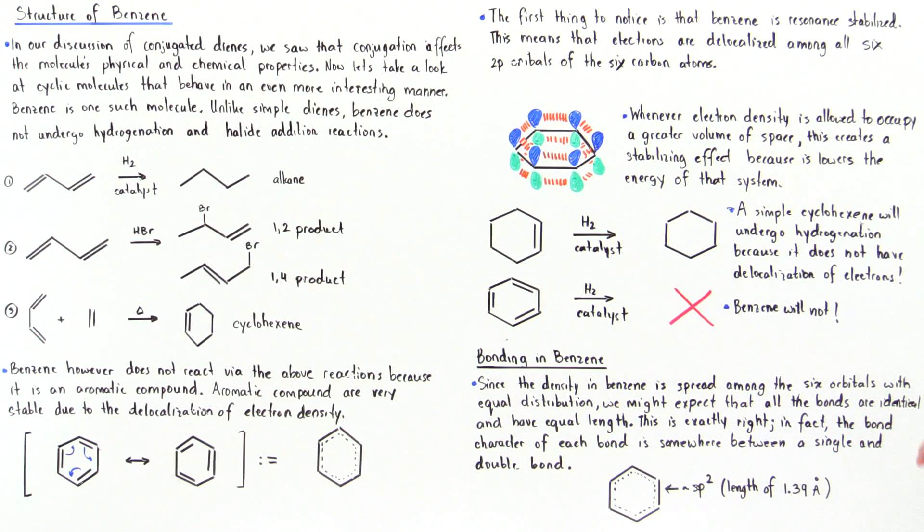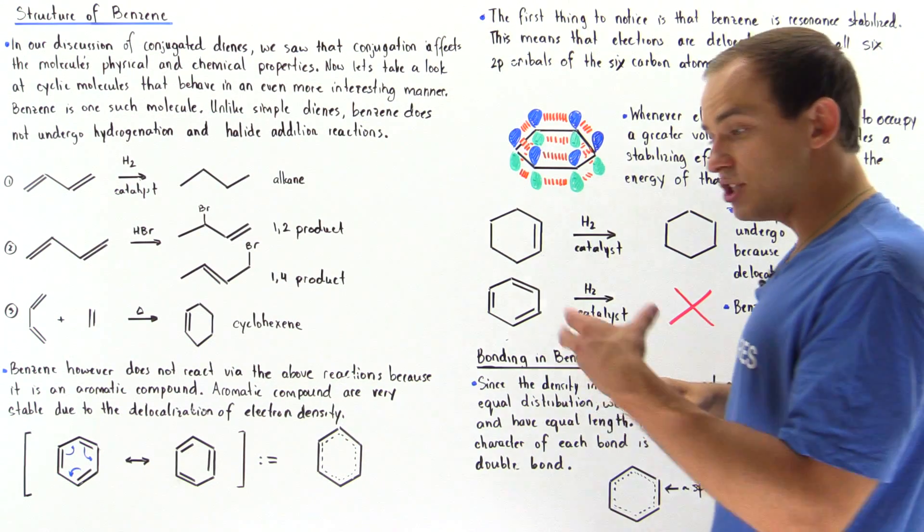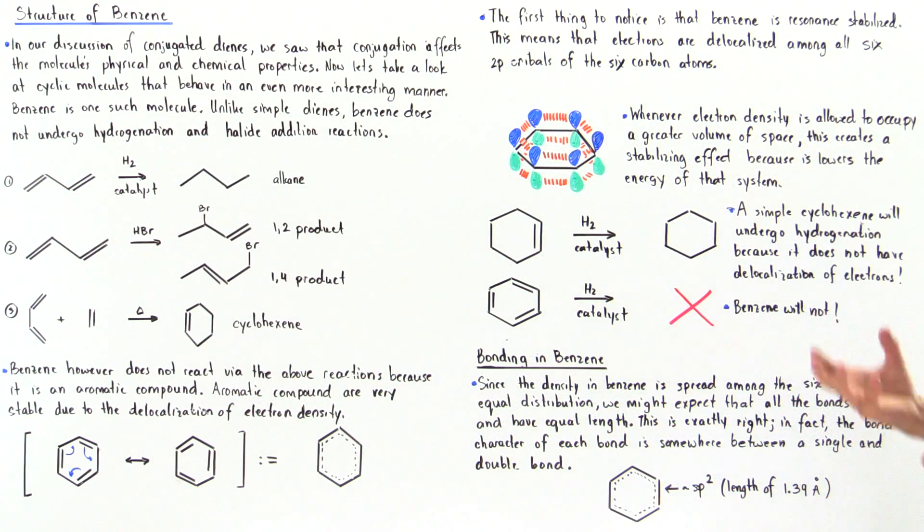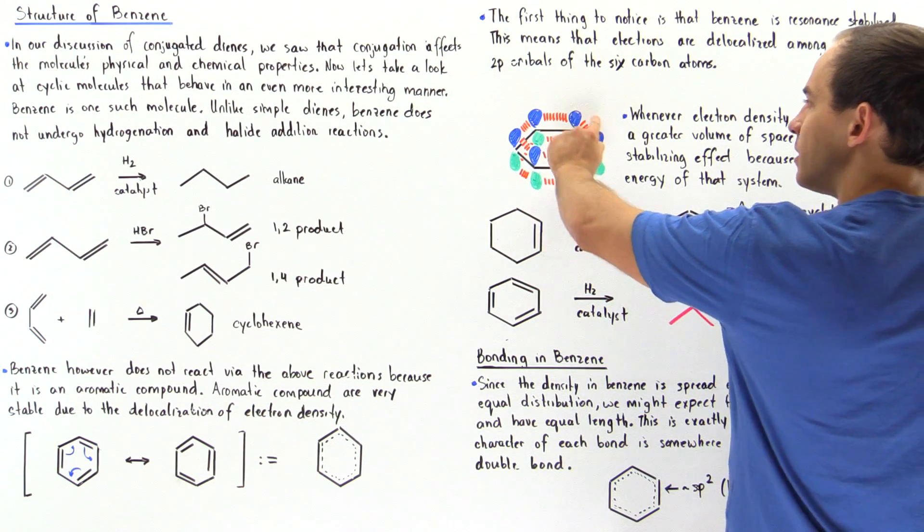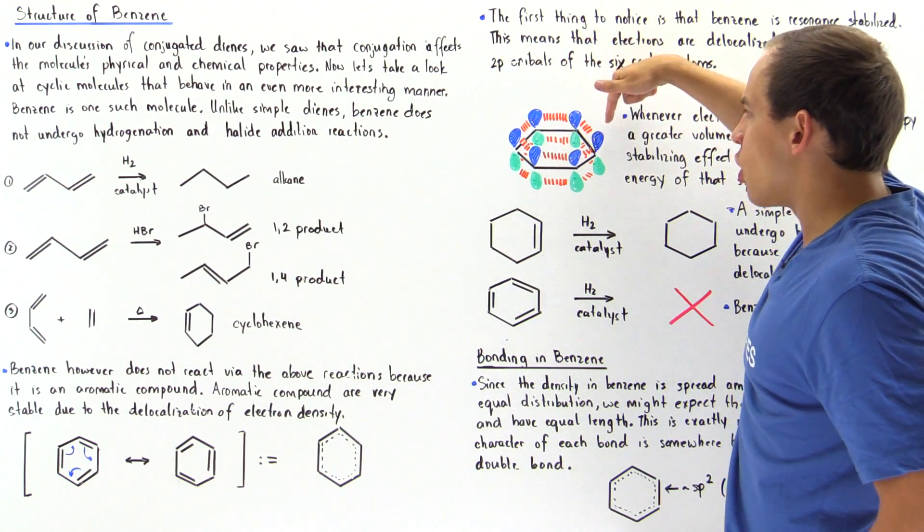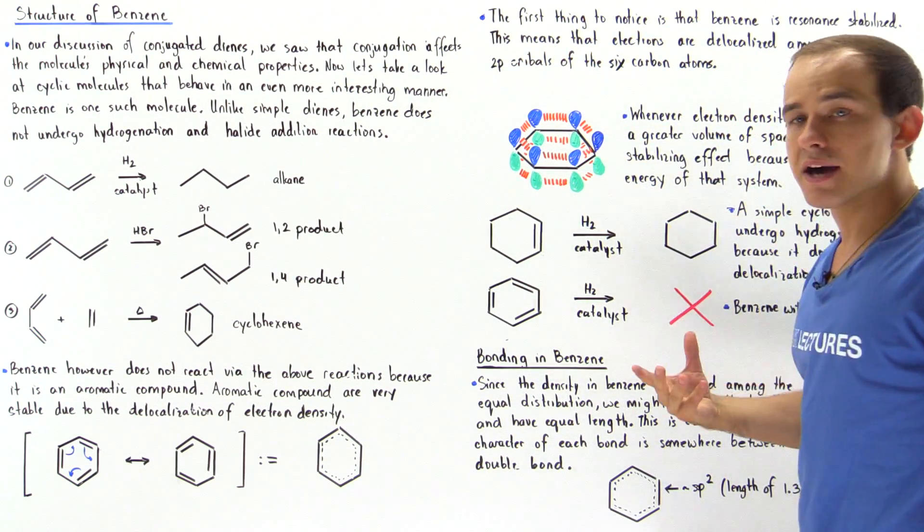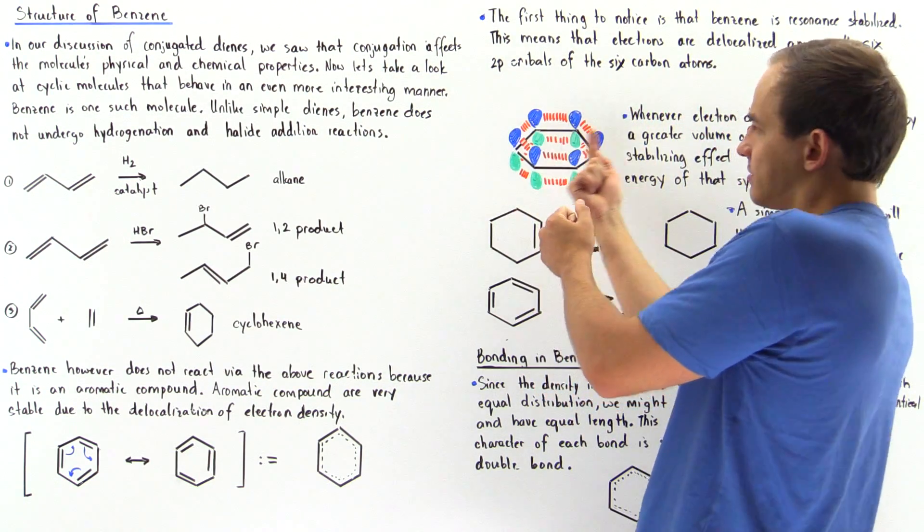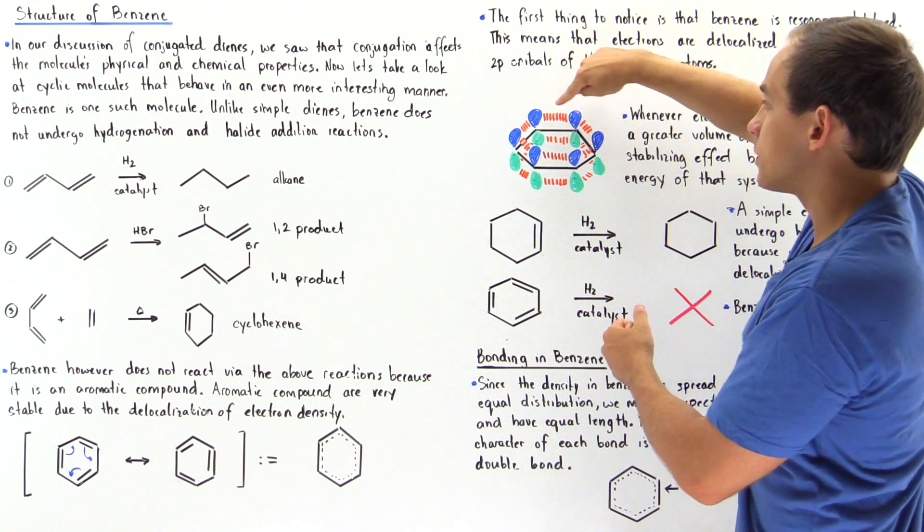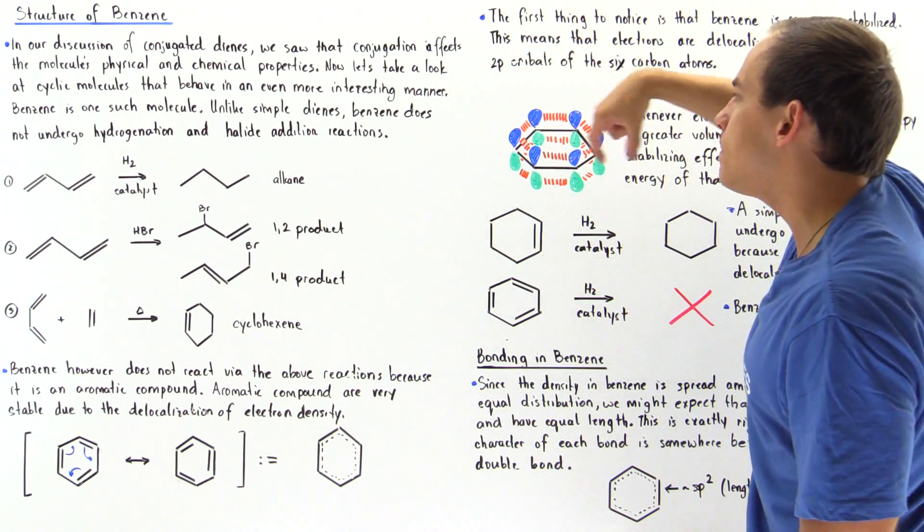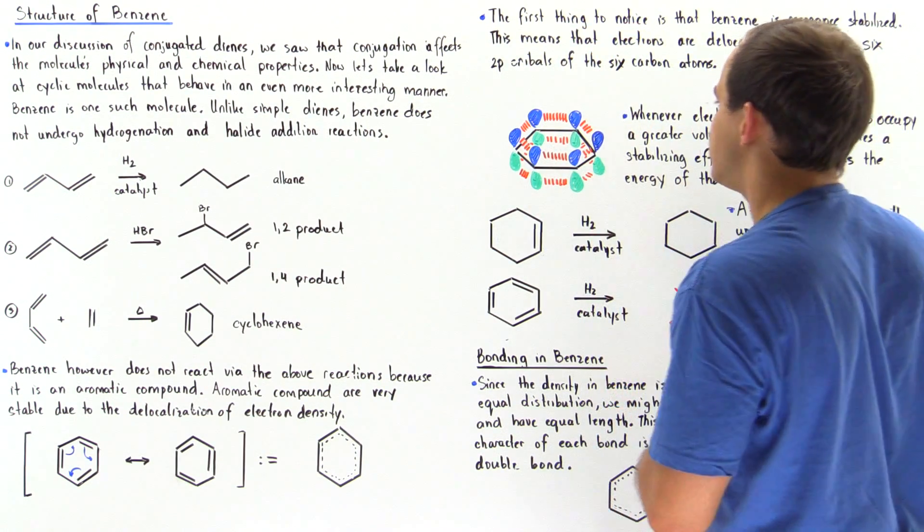So the first thing to notice is that benzene is resonant stabilized. And this means that electrons and electron density will be delocalized among the six molecular orbitals of all our six carbon atoms. So basically, this is the diagram of the molecular orbital of our benzene. And notice that we have six blue lobes and six green lobes on the bottom. And so we have six 2p orbitals that basically overlap with one another on top and on the bottom. And these orange lines basically designate the fact that our electron density basically moves about in the following direction on top as well as on the bottom.